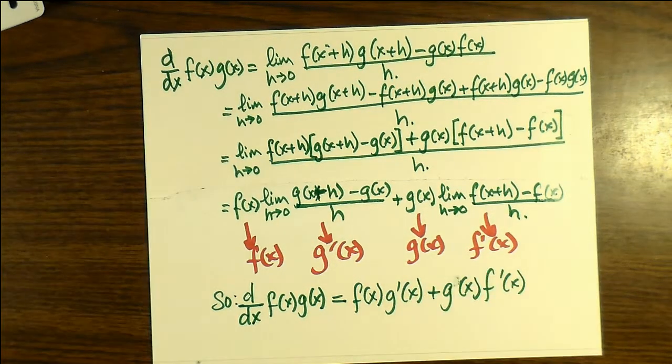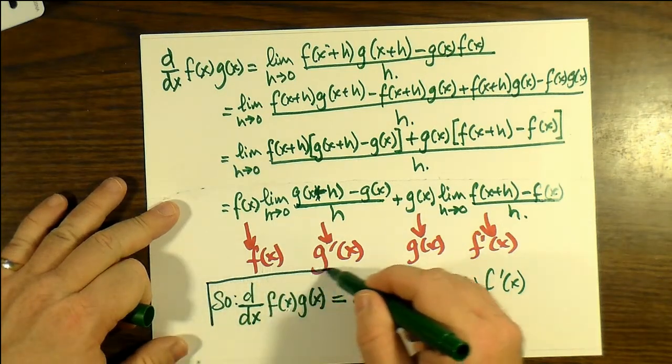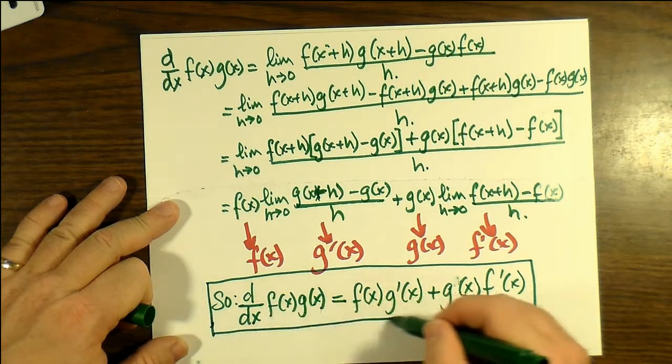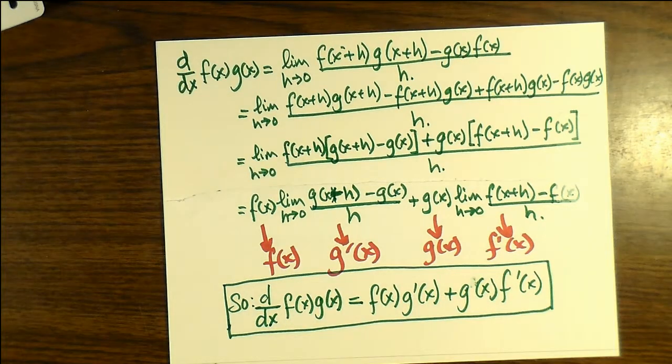We can now summarize the whole thing and just put it all together. Finally, d/dx of f(x) times g(x) equals f·g' plus g·f'.